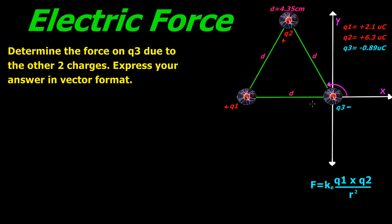The first thing we're going to do is draw a little diagram. We know that a positive and a negative force are going to attract each other, so Q1 is going to be pulling Q3 towards it. The same thing for Q2 since it's also positive and Q3 is negative. The vector for Q2 has a greater magnitude because Q2 is 6.3 microcoulombs and Q1 is only 2.1.